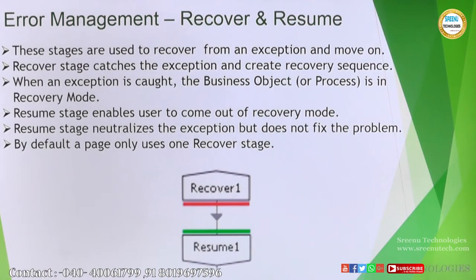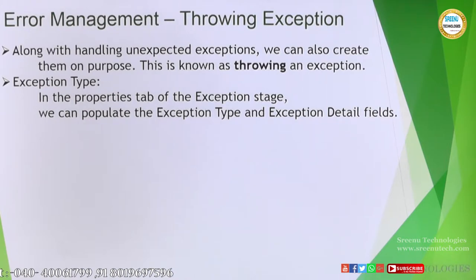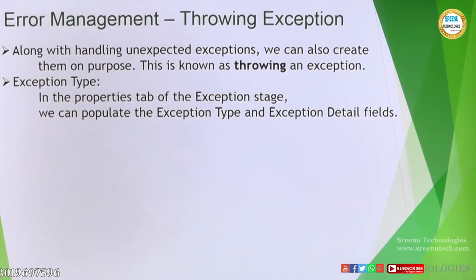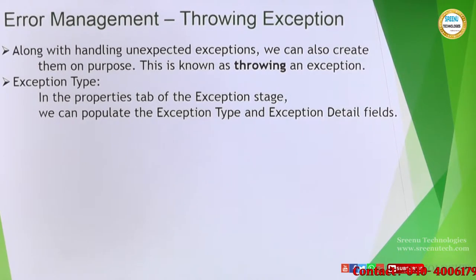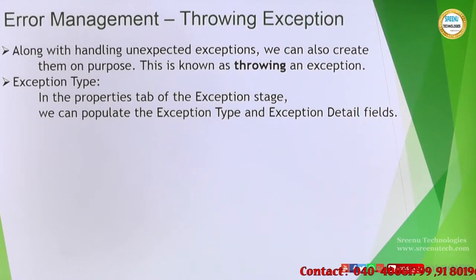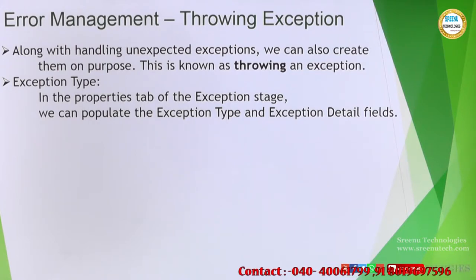Now we will see a use case where we need to throw an exception explicitly. In the division by zero case it happened on its own - there was a problem in the calculation stage and we saw an error. Now think that there are two sub-processes which we will be calling. If every detail is there - if you are reading two input values from a third party or getting them as input - the process will be executed fine. That is the happy path.